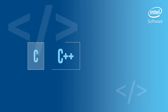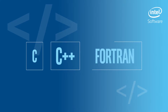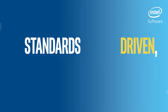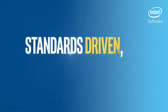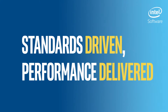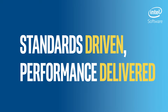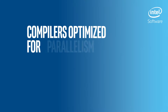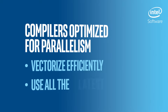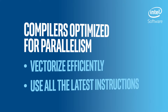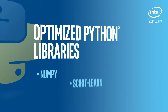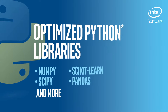Intel C, C++, and Fortran compilers are based on industry standards and tuned to produce high-performance code for modern processors. They provide powerful vectorization and threading libraries and optimization techniques. Python developers also benefit.